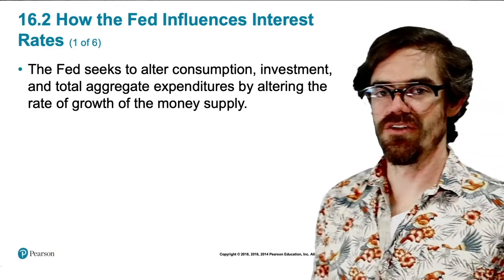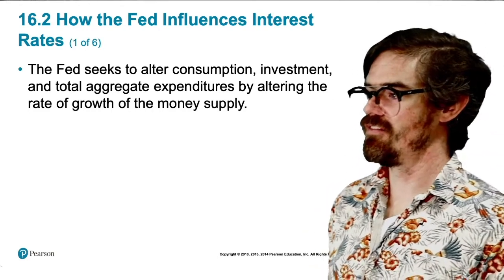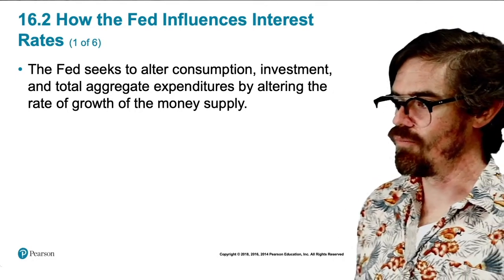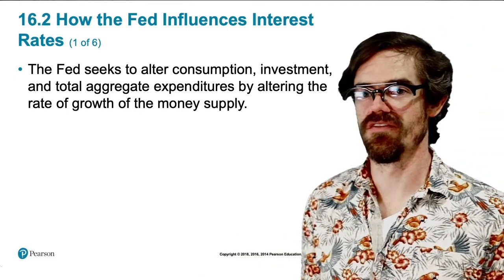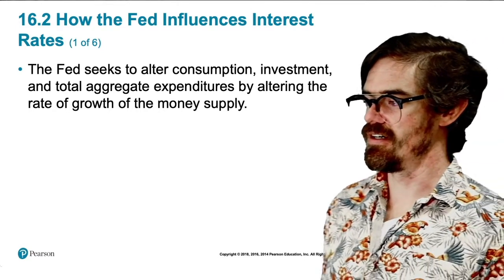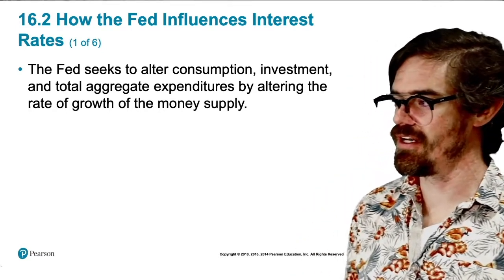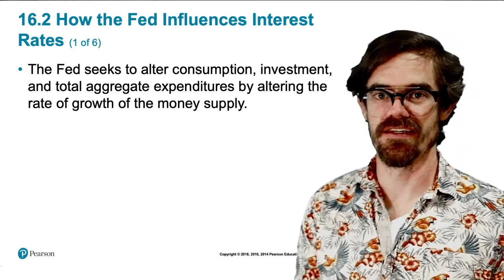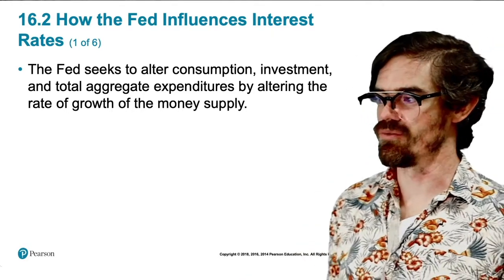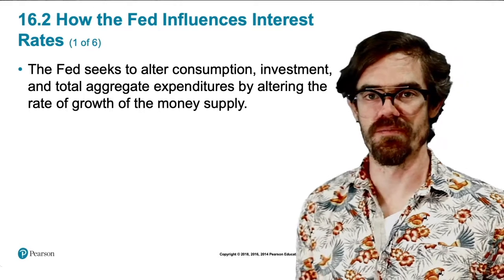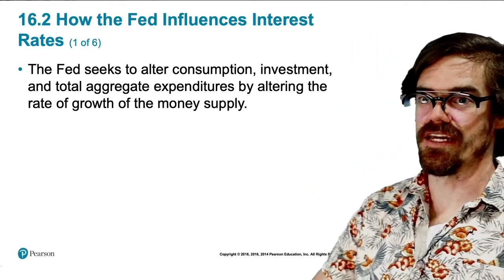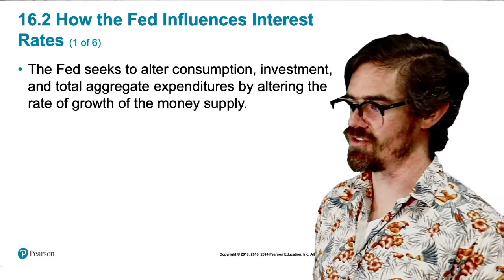So next, we're going to look at how the Fed influences interest rates in the economy. One of the main purposes of the Federal Reserve Bank, the Fed, is that they seek to alter consumption, investment, and in essence, total aggregate expenditure by altering the rate of growth of the money supply. And they do this by basically indirectly affecting interest rates.